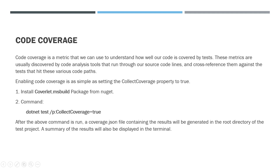Now we will understand code coverage. Code coverage is a metric that we can use to understand how well our code is covered by tests. These metrics are usually discovered by code analysis tools that run through our source code lines and cross-reference them against the tests that hit various code paths. Enabling code coverage is as simple as setting the collect coverage property to true. Two things we need: one, install the coverlet.msbuild package from NuGet; two, run the command dotnet test /p:CollectCoverage=true.